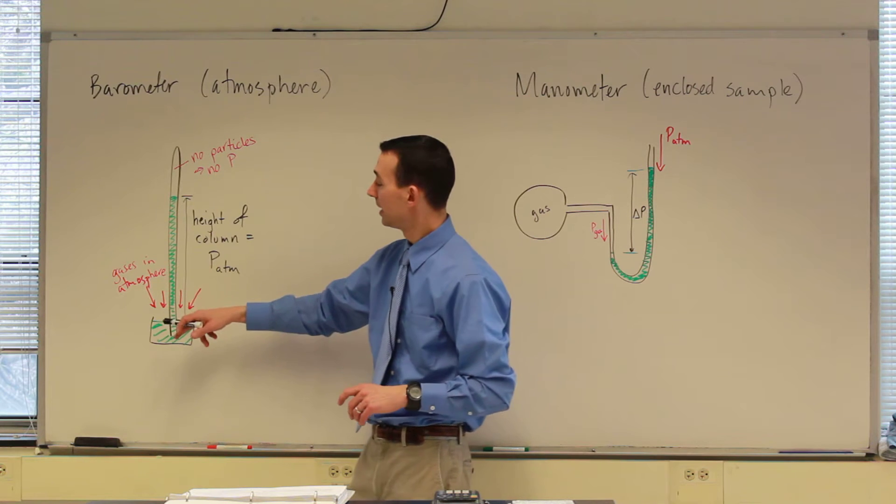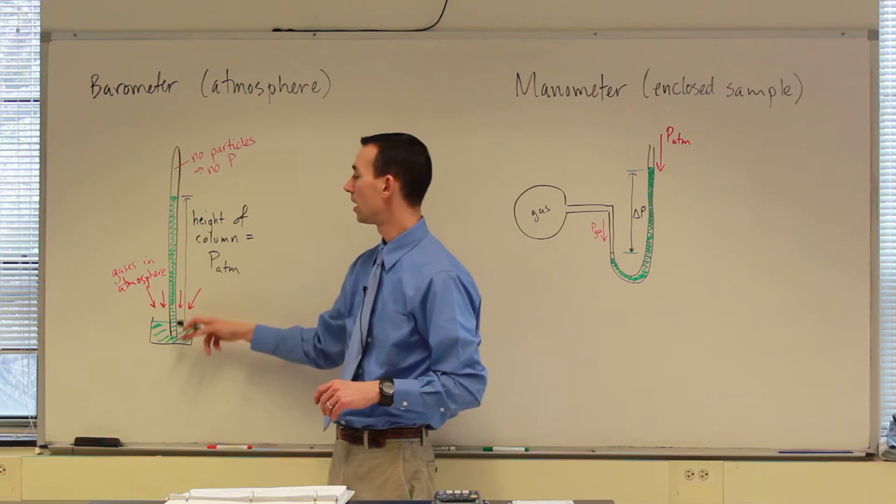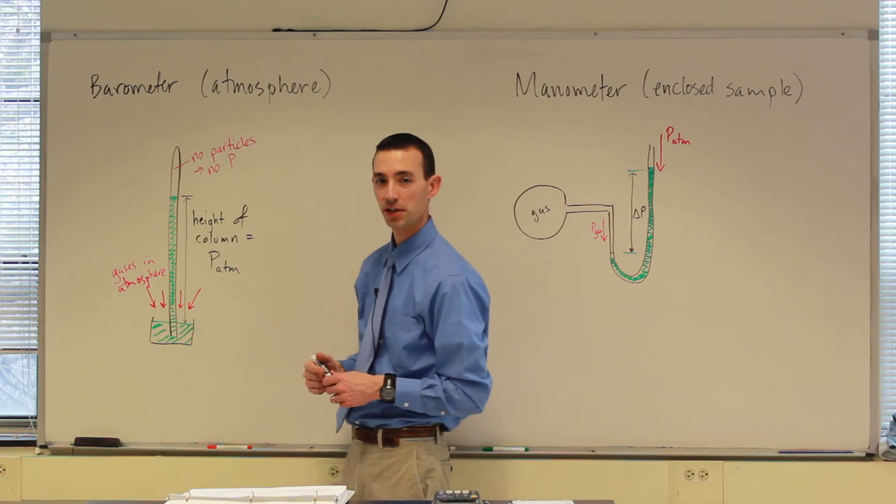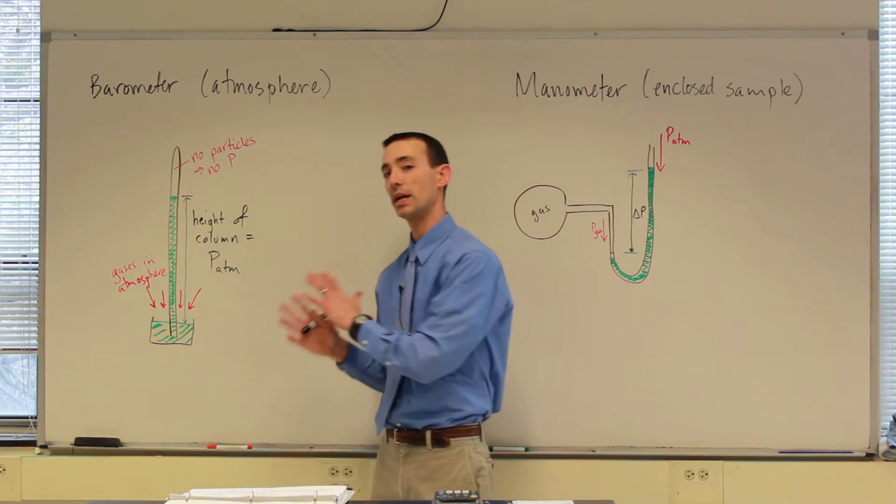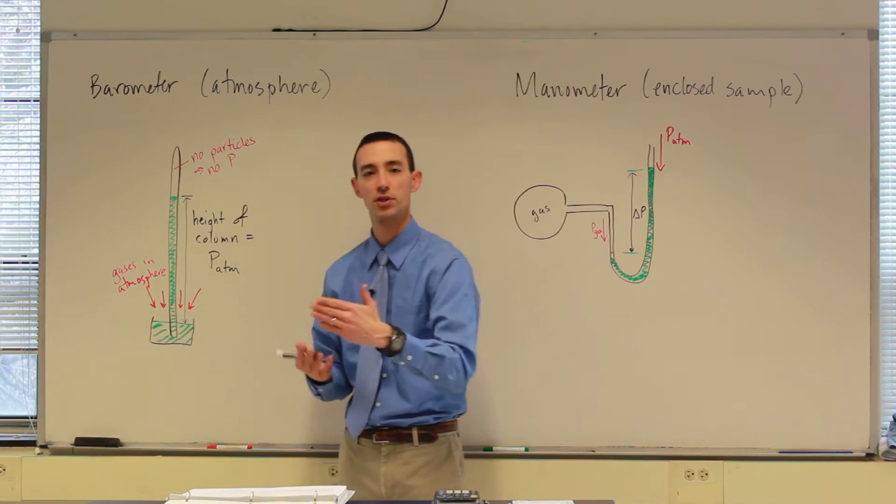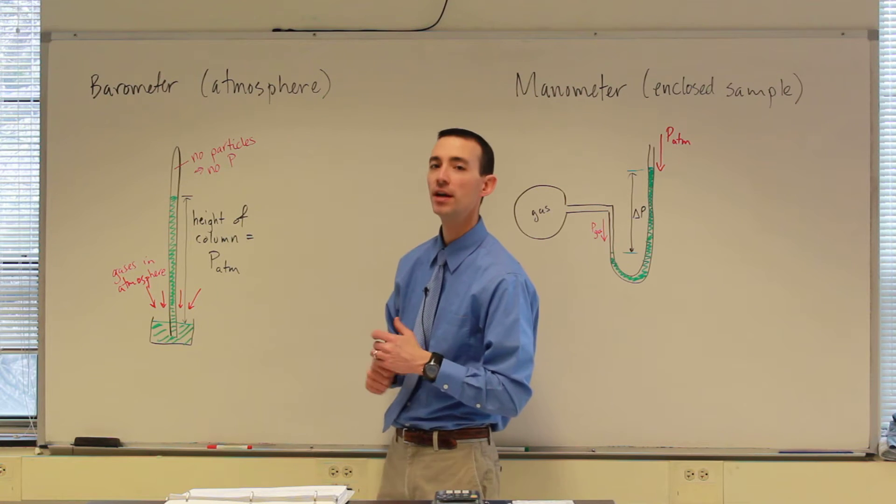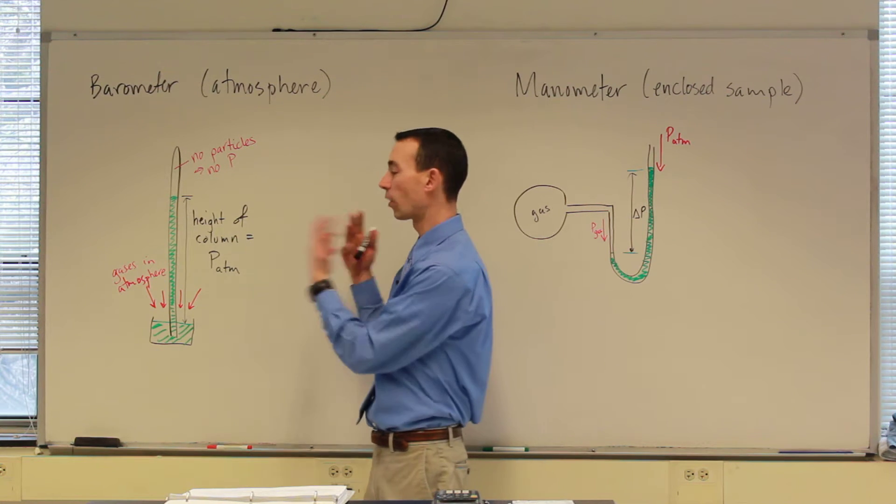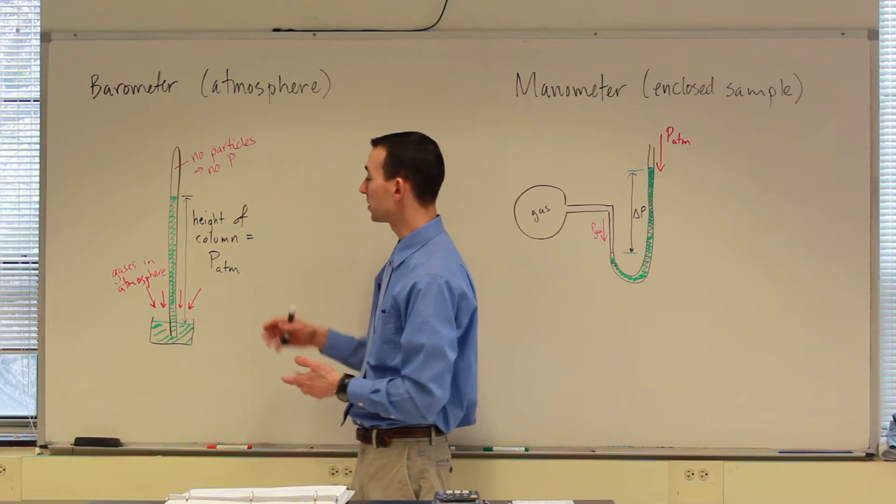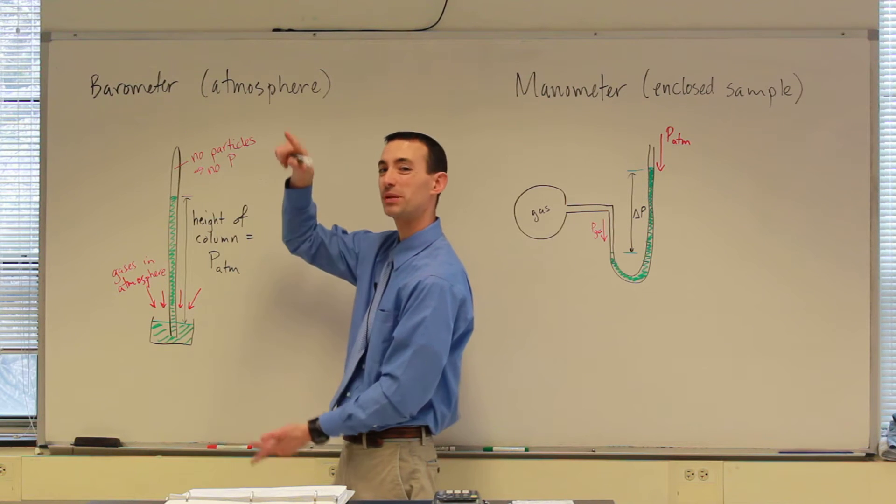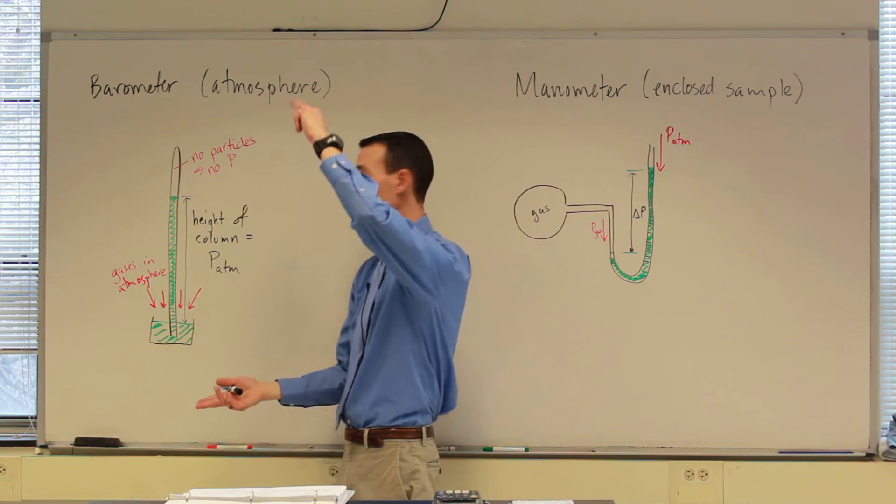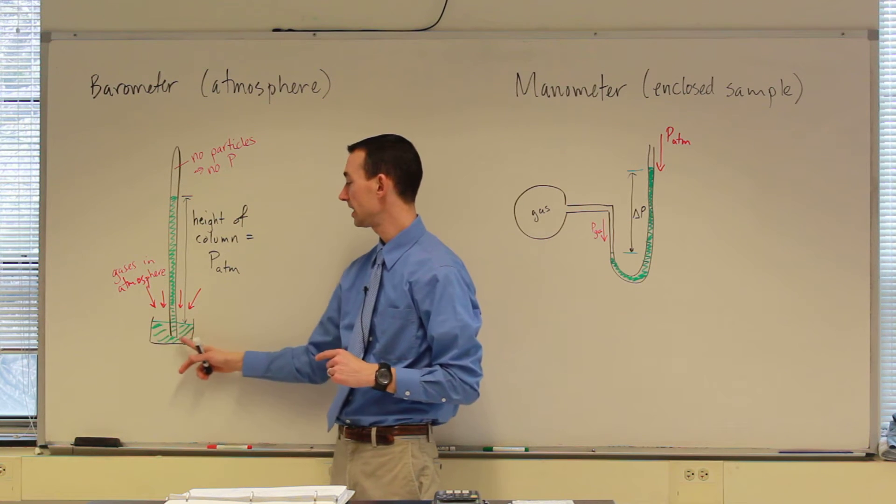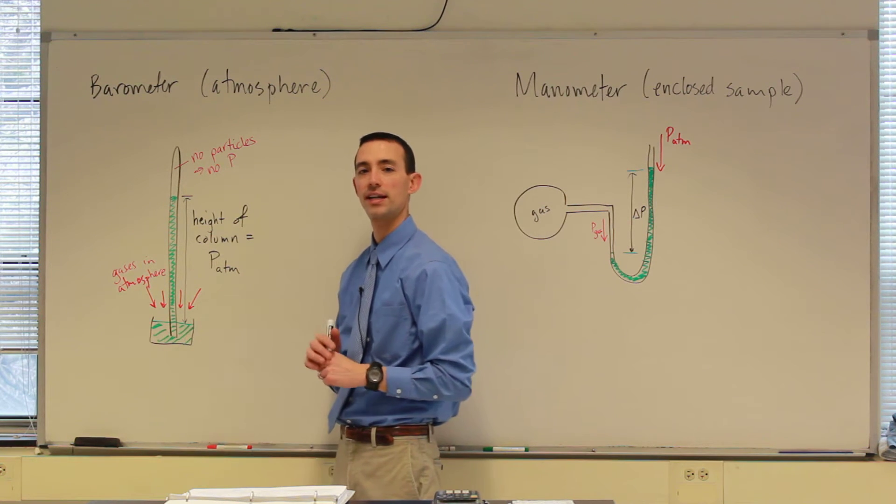A barometer is a long tube containing mercury. Now, originally it's prepared, although nowadays we would not use a mercury version to reduce the hazards associated with mercury. But the way you would have made an old-fashioned barometer would be to have filled the tube with mercury completely, turn it upside down, and then let it sit in a pool of mercury at the bottom.